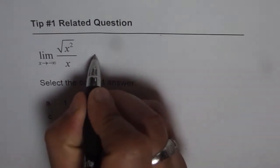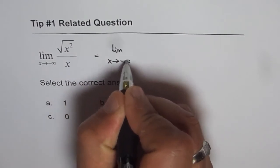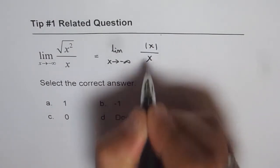Well we can write this as limit x approaches minus infinity and square root of x squared is absolute x over x, right.